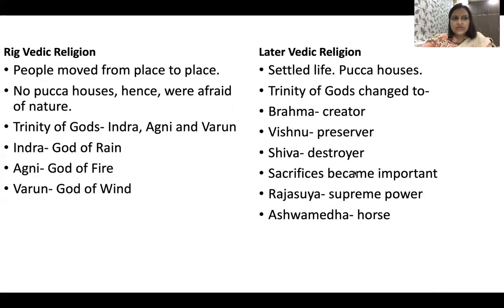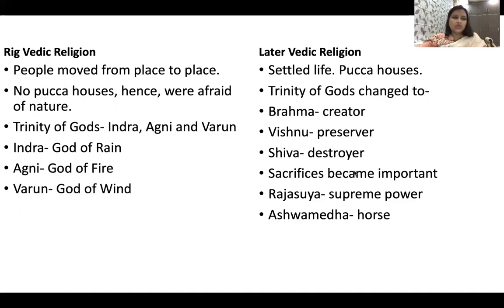Now let us see religion. In the Rig Vedic period, they were semi-nomadic — the people moved from place to place, so there were no pakka houses, and they were afraid of nature. The trinity of gods which came at this time was Indra, Agni, and Varun. Indra was the god of rain, Agni the god of fire, and Varun the god of wind. They prayed to these gods because they were afraid of massive rains, wind, and fire as they were moving from place to place.